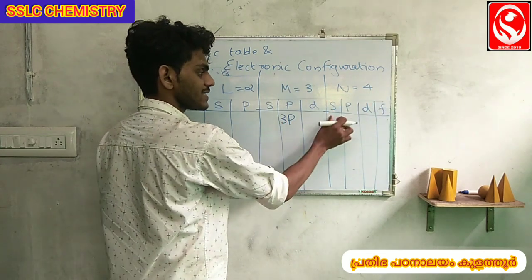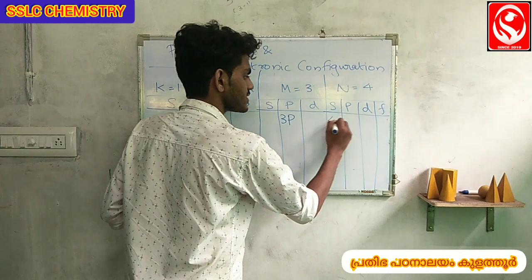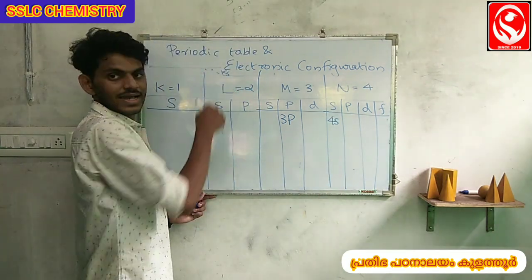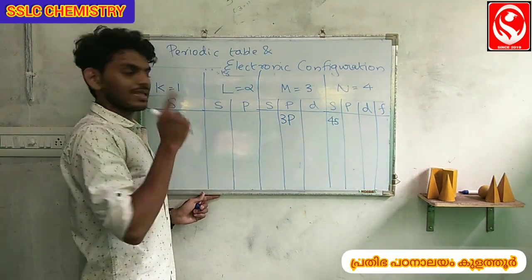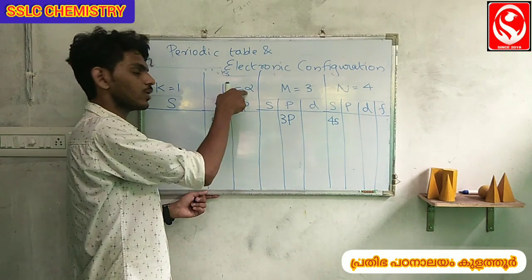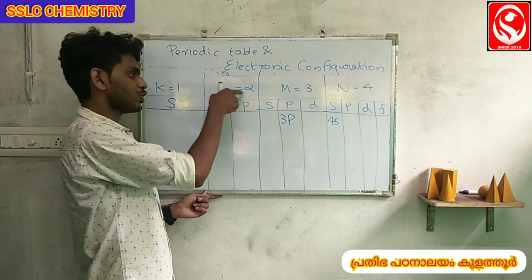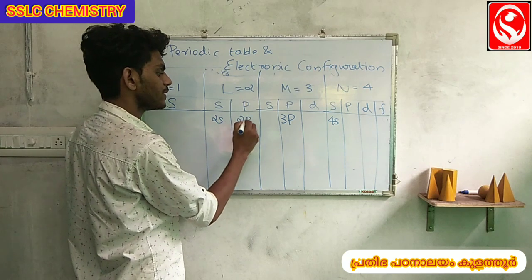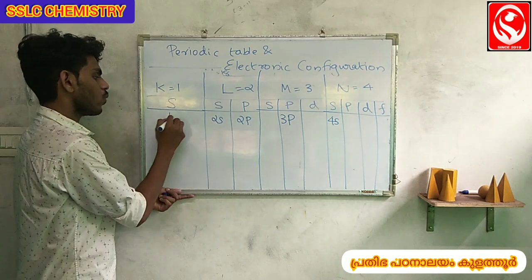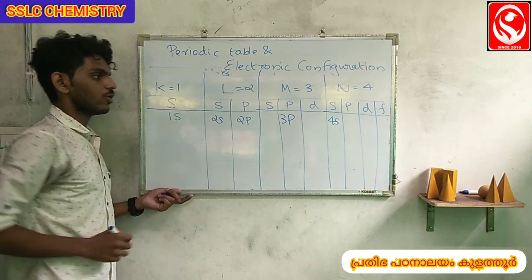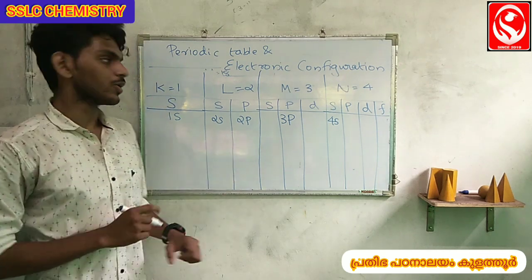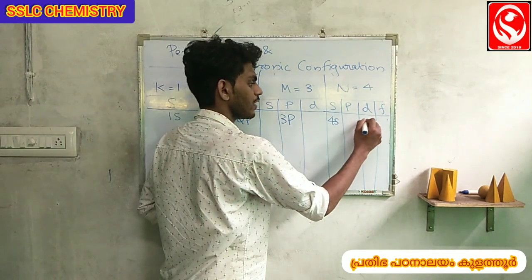The fourth shell has 4s. The second shell has 2s. The first shell has 1s. The fourth shell also has 4d. Each shell's subshells are named by combining the shell number with the subshell letter.